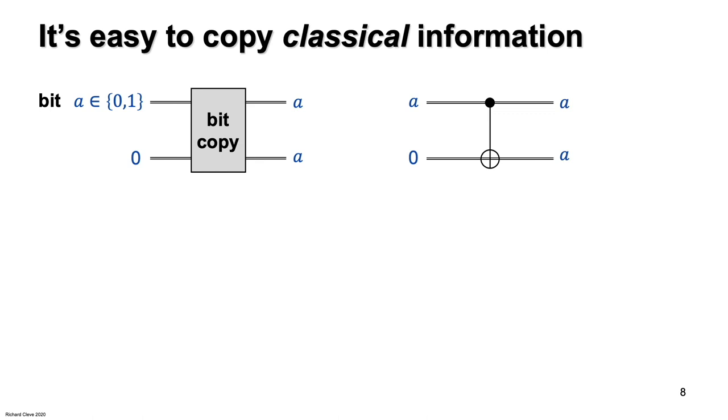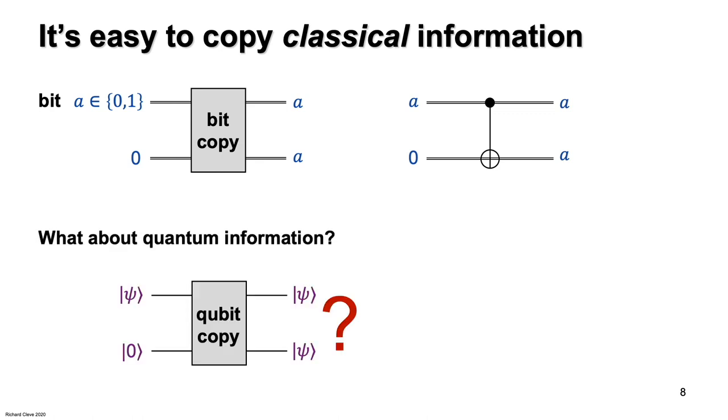We know classical information can be copied. I back up my files all the time. What about quantum information? So now we have a qubit in state psi, which is an arbitrary state. And then we have another qubit in state ket 0, which plays the role of the blank sheet of paper going into a copier. And we want to perform some unitary operation such that the output is two copies of the state psi. Can we do that?